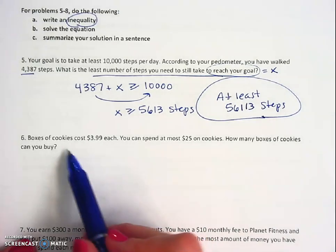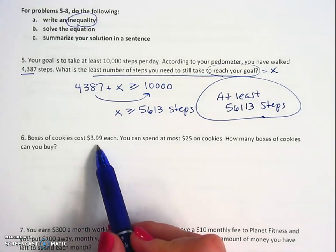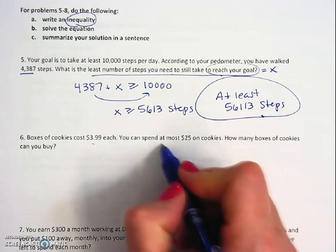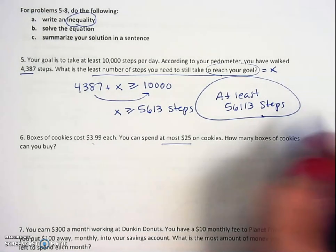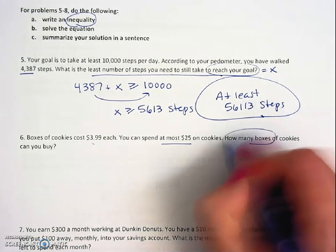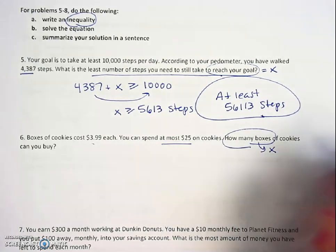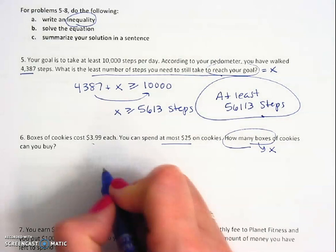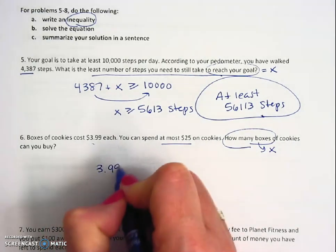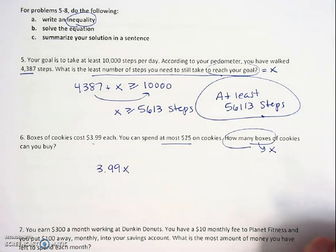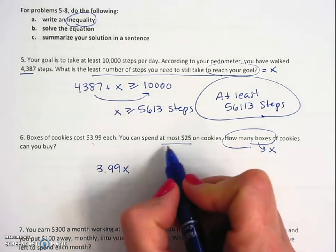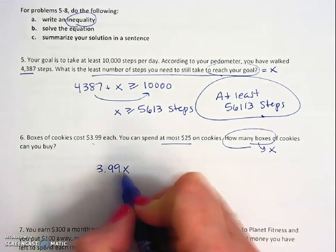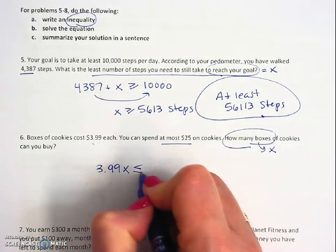Number six: boxes of cookies cost $3.99, you can spend at most $25. How many boxes of cookies can you buy? So here's what I'm looking for—that's going to be my variable. X equals boxes of cookies, so it's $3.99 each, so $3.99 times however many boxes you have, and I can spend at most $25, so this total has to be less than or equal to 25.